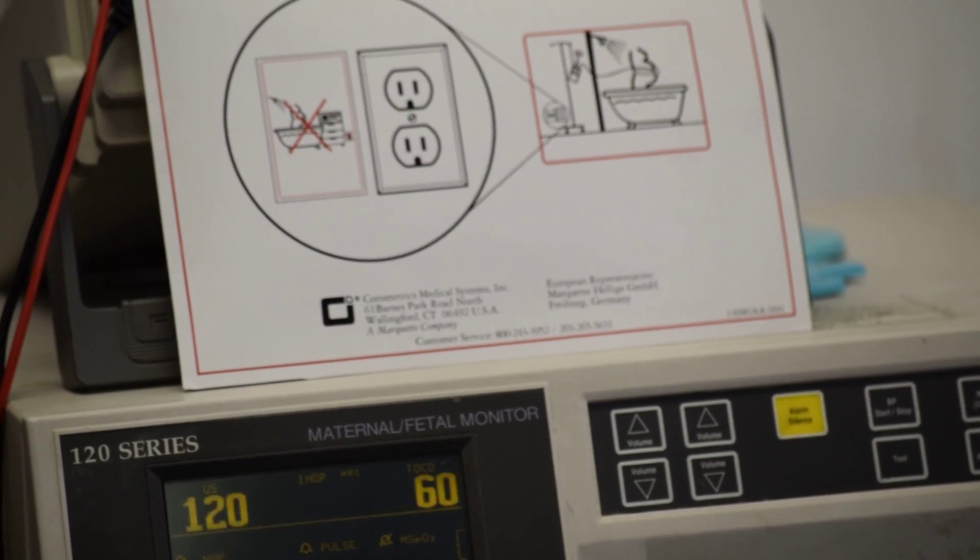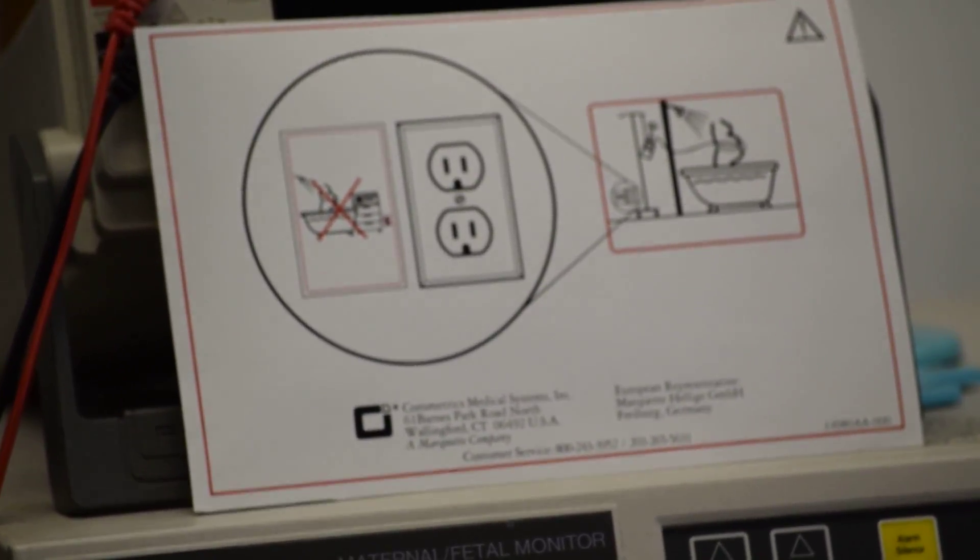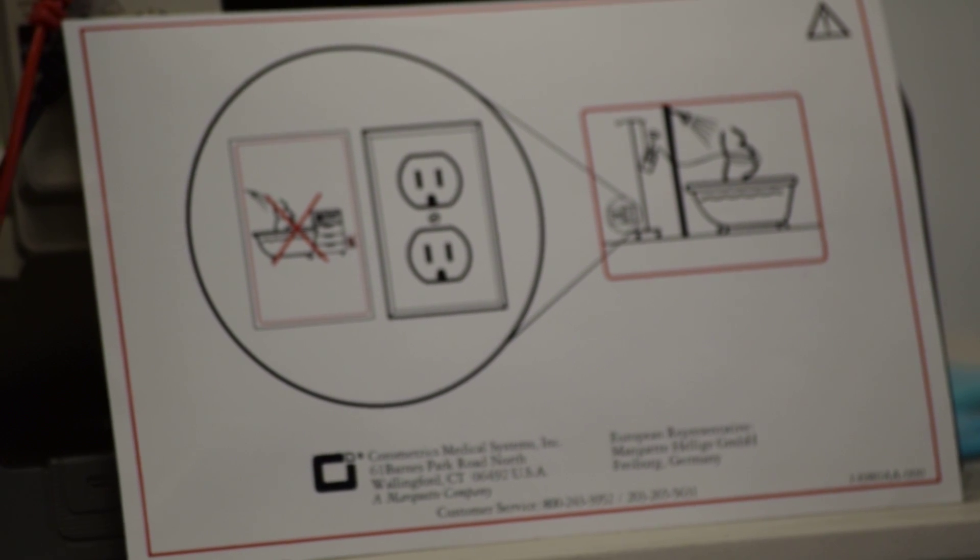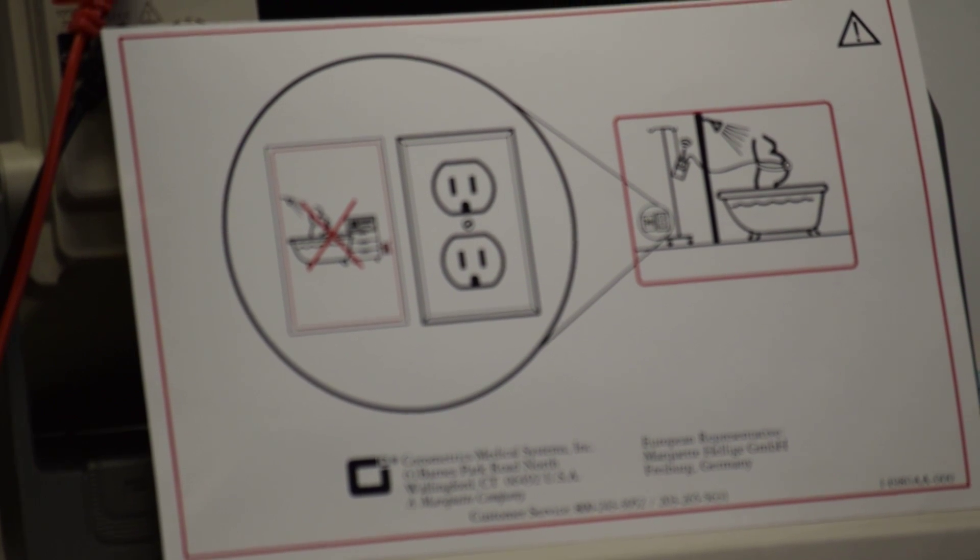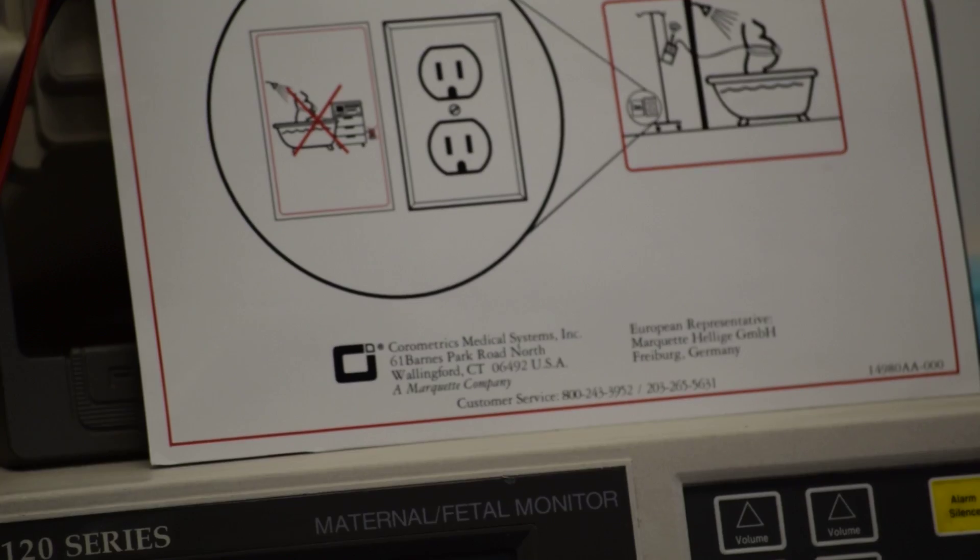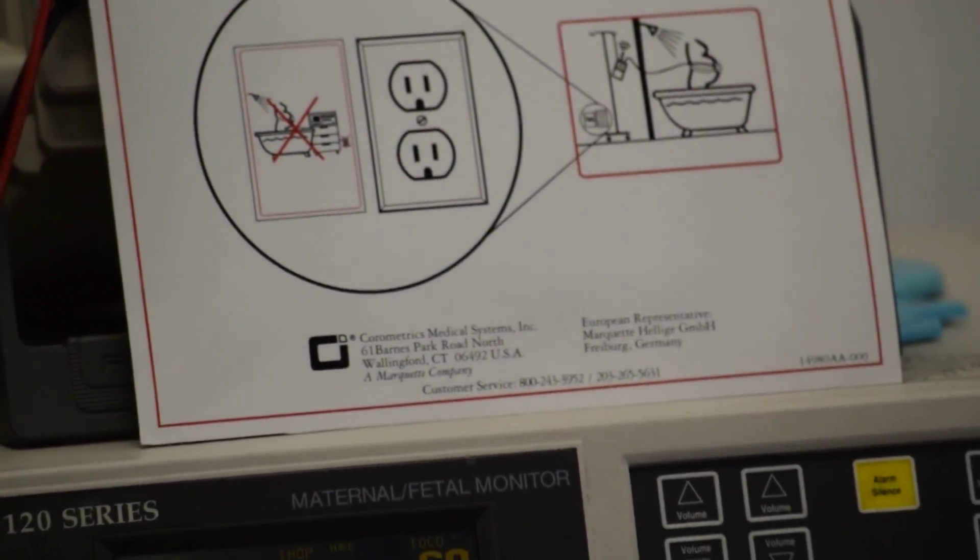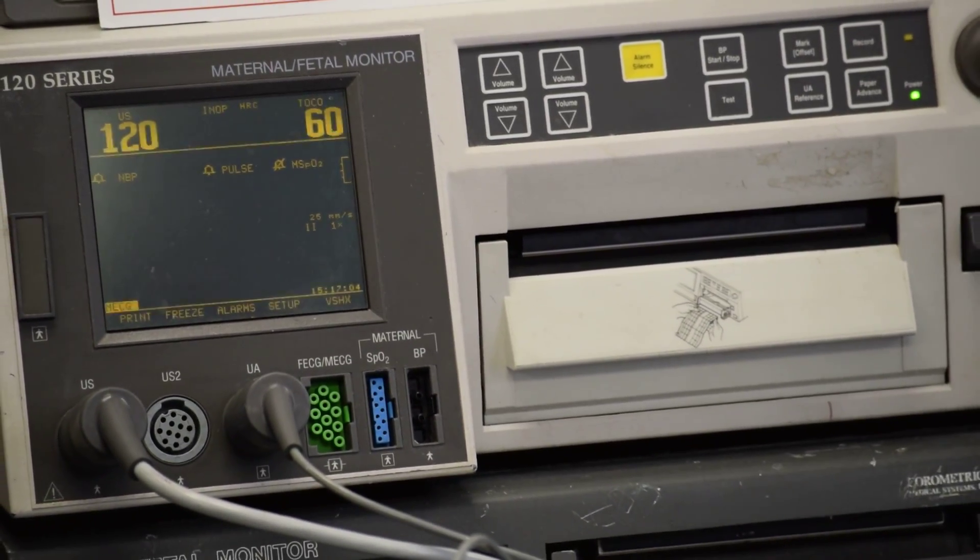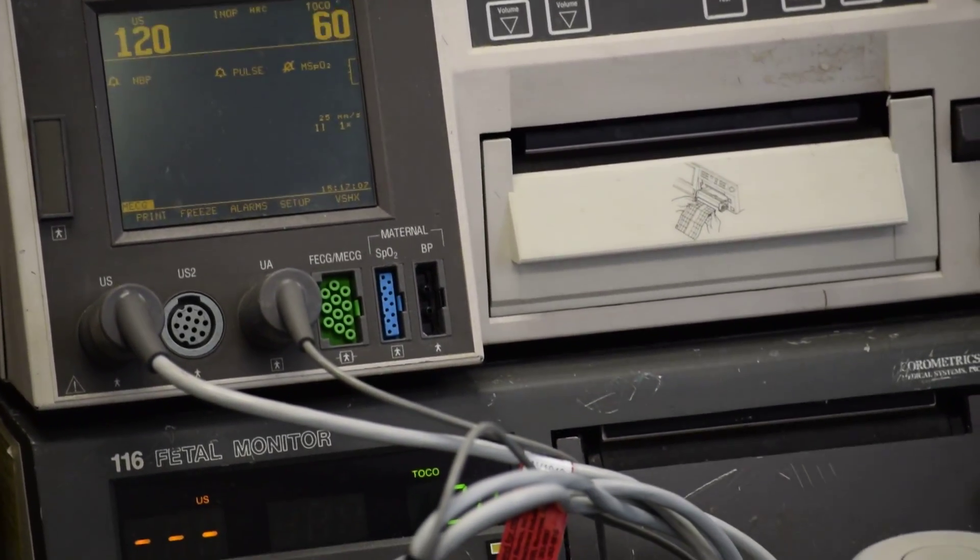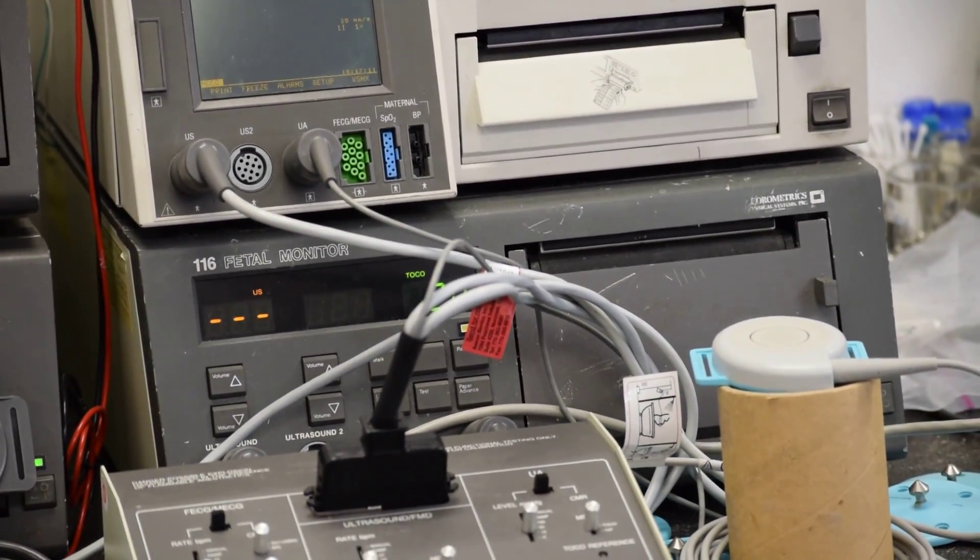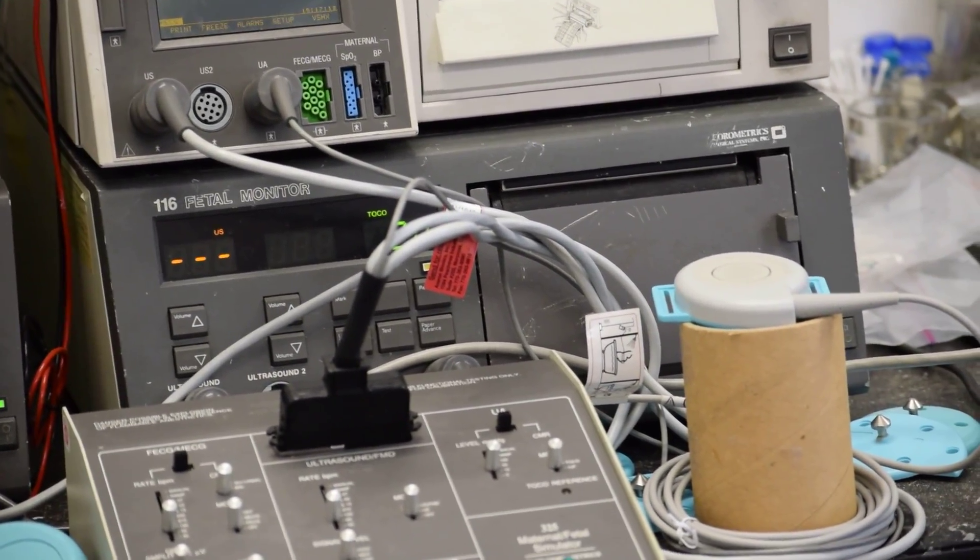GE Corometrics Nautilus transducers, both Toko and ultrasound, Toko model 2264 LAX and HAX, they are watertight and not waterproof. That is not for underwater usage.